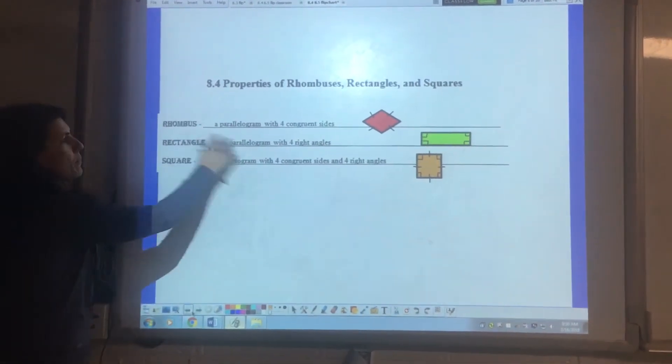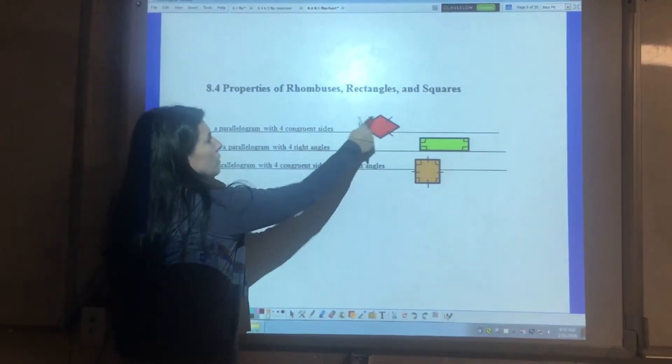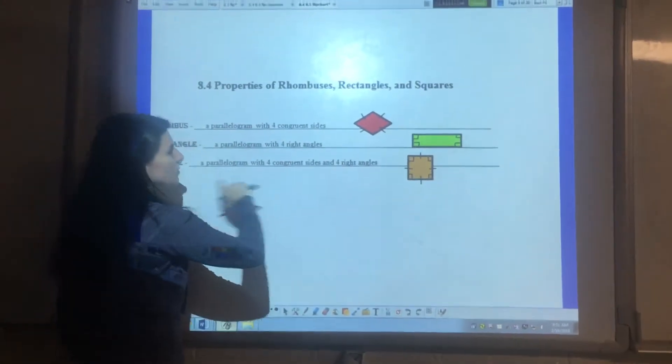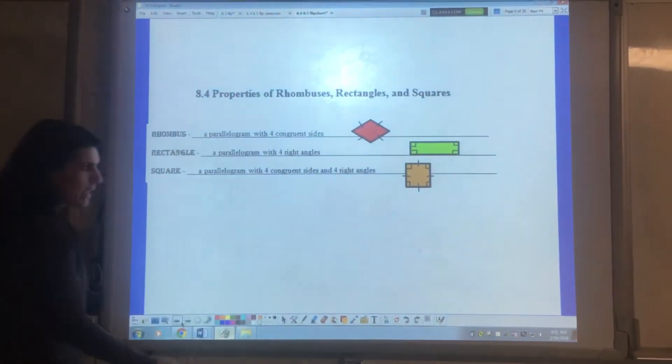These are definitions. A parallelogram is a rhombus if it has four congruent sides. A rectangle has four right angles and a square has four congruent sides and four right angles.